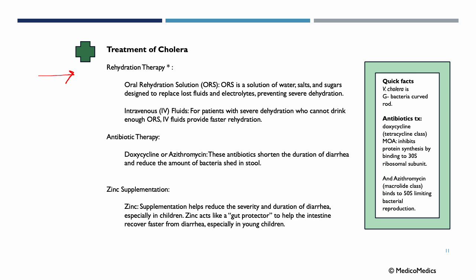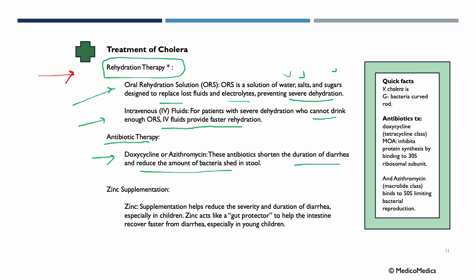Treatment of cholera centers on rehydration therapy. Oral rehydration solutions — a solution of water, salts, and sugars — replace lost fluids and electrolytes to prevent severe dehydration. For patients with severe dehydration who cannot drink enough, IV fluids provide faster rehydration. Antibiotic therapy with doxycycline or azithromycin shortens the duration of diarrhea and reduces bacterial shedding. Zinc supplementation helps reduce the severity and duration of diarrhea, especially in children, acting as a gut protector to help the intestine recover faster.